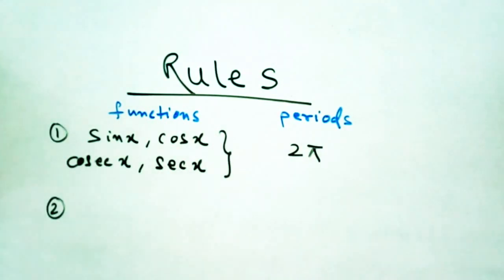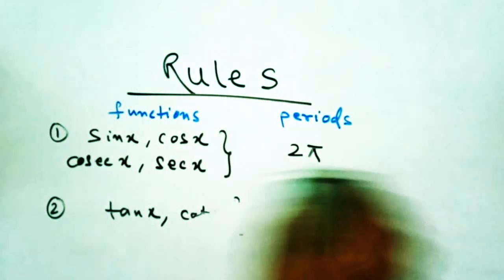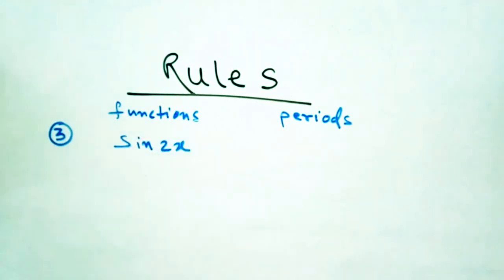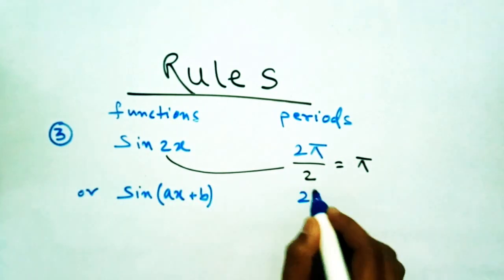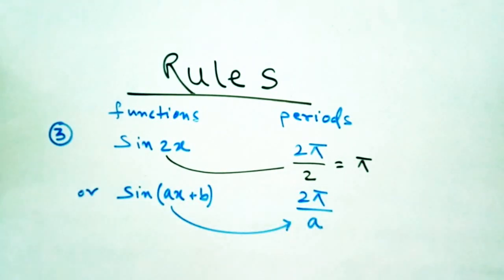And rule number 2: tan x and cot x have a period of π. Now rule number 3, this is the most important rule in this section. The period of sin(2x) or sin(ax + b), that means some constant is multiplied with the value of x. In this case, the period of the function will be 2π divided by the coefficient of x.